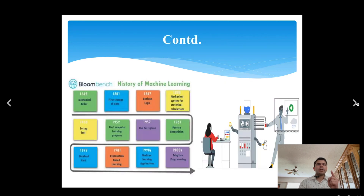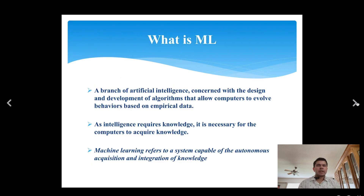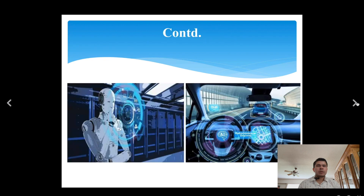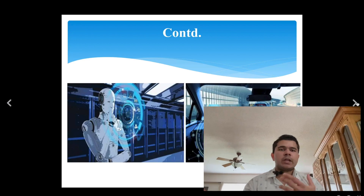Machine learning and data science go hand in hand, with data science being the foundation on which machine learning thrives. Data science involves collecting, cleaning, and analyzing vast amounts of data to extract meaningful insights and patterns. Machine learning uses these insights to build models that can predict outcomes or classify new data.